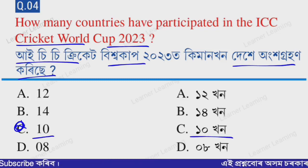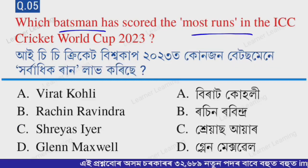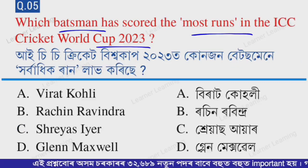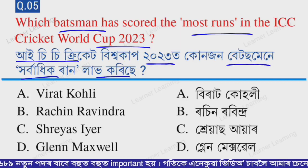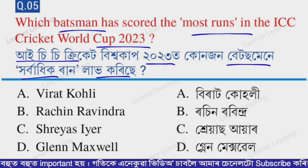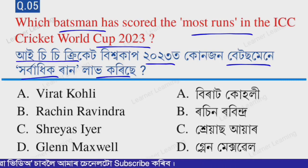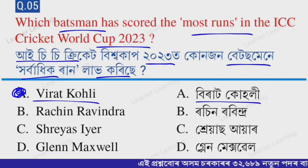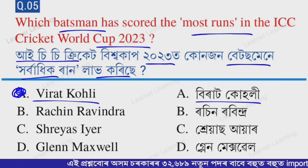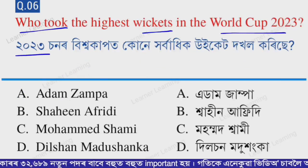It is a very important question. Next question: which batsman has scored the most runs in the ICC Cricket World Cup 2023? Options are: A — Virat Kohli, B — Rachin Ravindra, C — Rassie van der Dussen, and D — Glenn Maxwell. The correct option is option A — Virat Kohli. Virat Kohli scored the most runs in the ICC Cricket World Cup 2023.